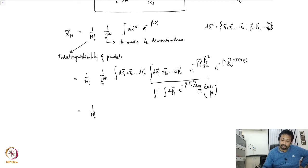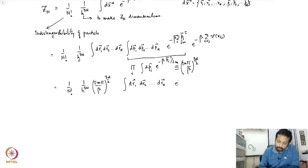So this integral is going to be 3n by 2. So I am going to have 1 over h to the power 3n times 2m pi over beta raised to the power 3n by 2, integral dr_1 dr_2 dr_n e to the power minus, then we continue with this sum over ij V of r_ij.